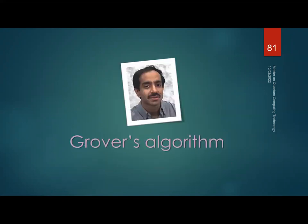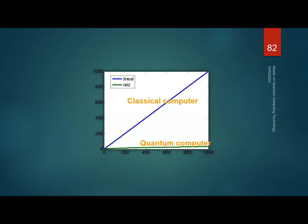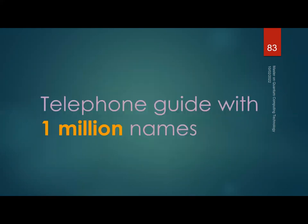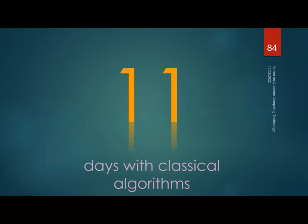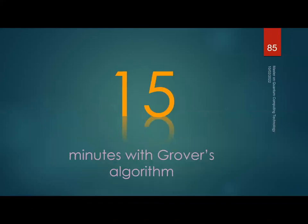At that time nobody thought a quantum computer could actually be built, so no one was really worried. There are other quantum algorithms of interest, such as Grover's algorithm. This algorithm searches an unordered database — on average you need to go through n/2 entries classically, but with a quantum computer this decreases to the square root of n. For example, with a phone book of one million names, a classical algorithm takes 11 days, but Grover's algorithm takes only 15 minutes.